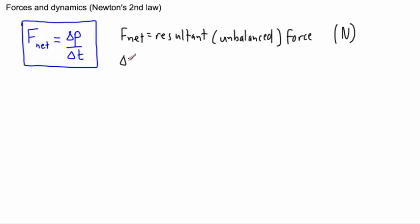Delta p represents a change in momentum. Now momentum is a quantity that is equal to mass times velocity, m times v. Momentum is technically a vector, so we should probably put little vector signs on top of it. This is a change in momentum.